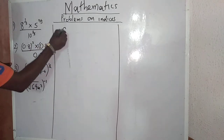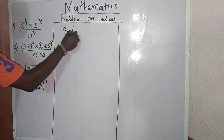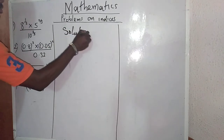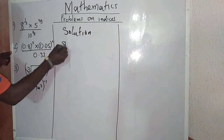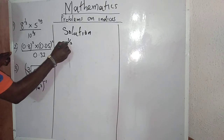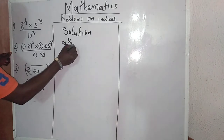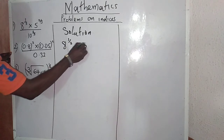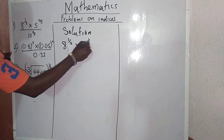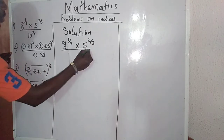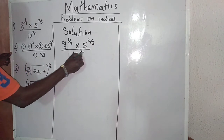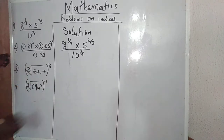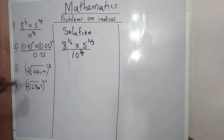The first one — solution. I have 8 raised to the power 1/3, multiplied by 5 raised to the power 2/3, all divided by 10 raised to the power 2/3. If I have this type of problem, how would I do it?